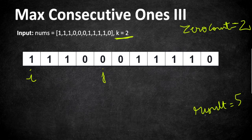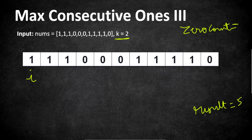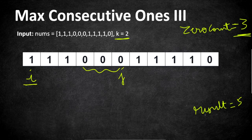Now we decide whether to move j or i. We can move j to extend the window only if the next element is a 1, since we've already reached k zeros. Moving j to the next element gives us a 0, so zero_count becomes 3. But we can't have 3 zeros — we need to reduce it to 2 or fewer by moving pointer i.